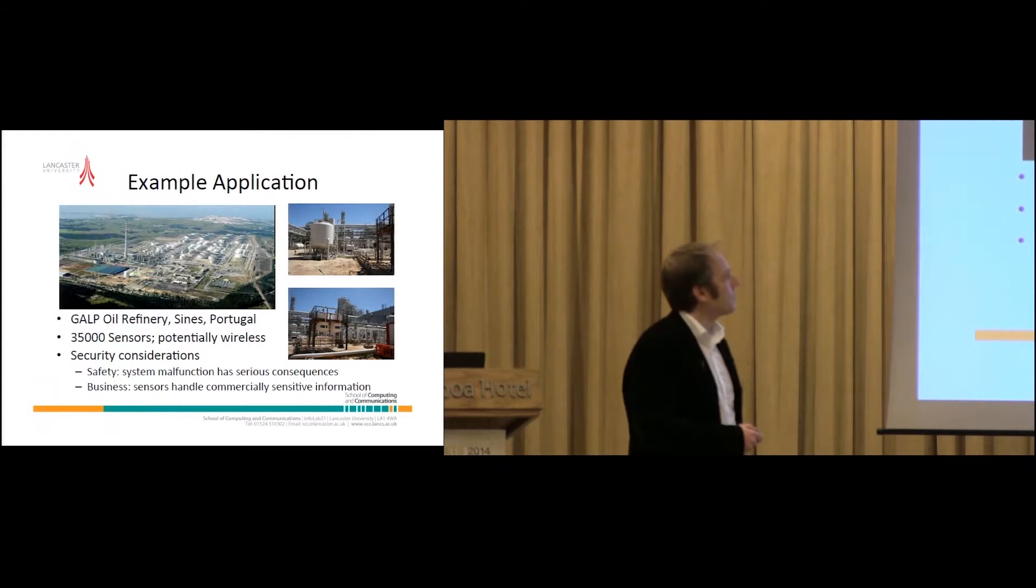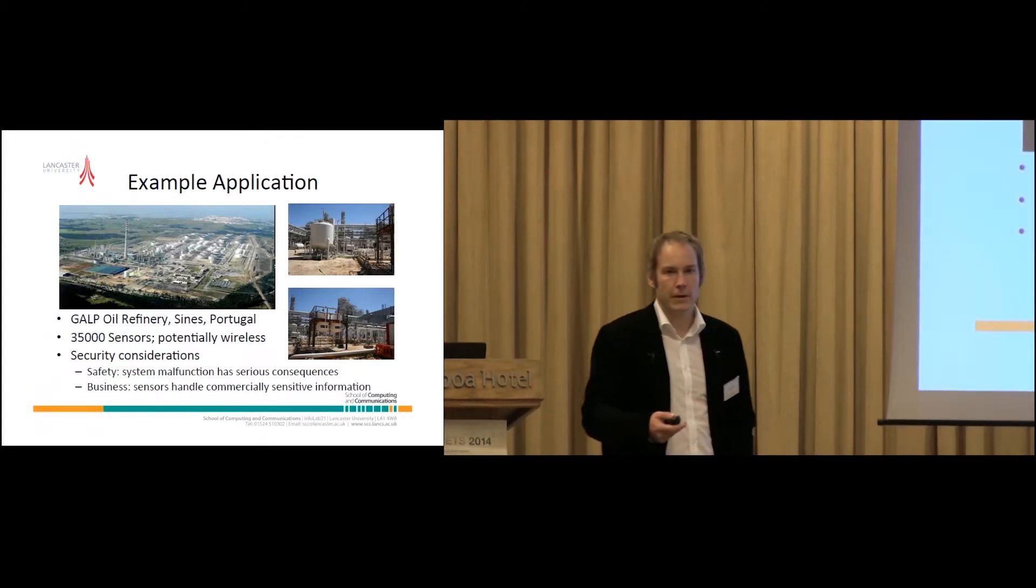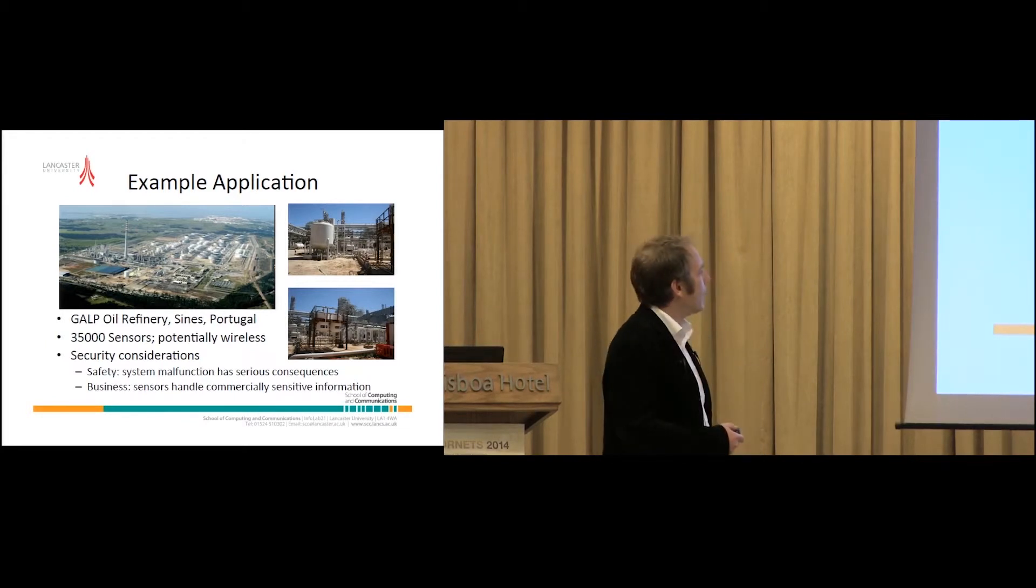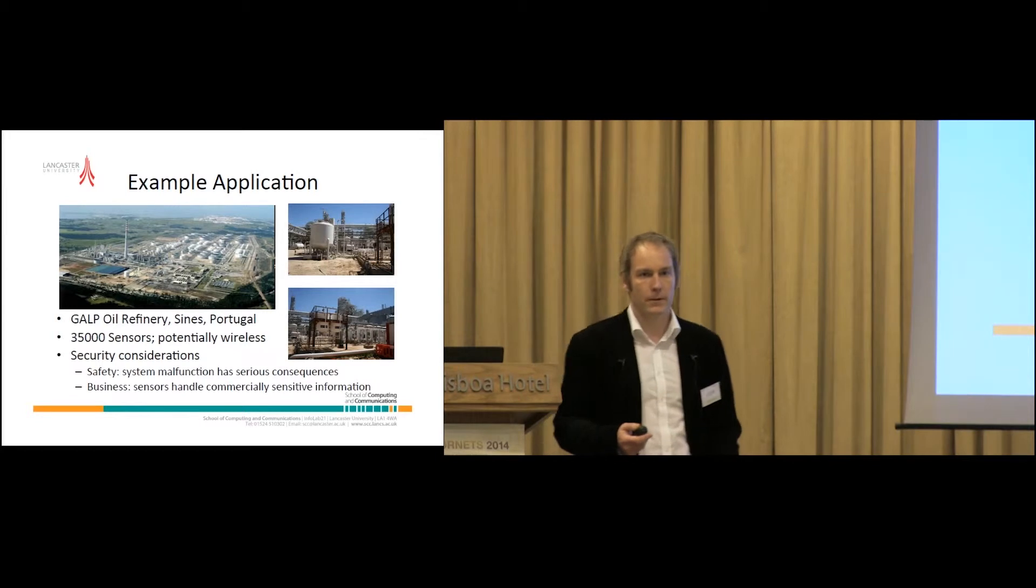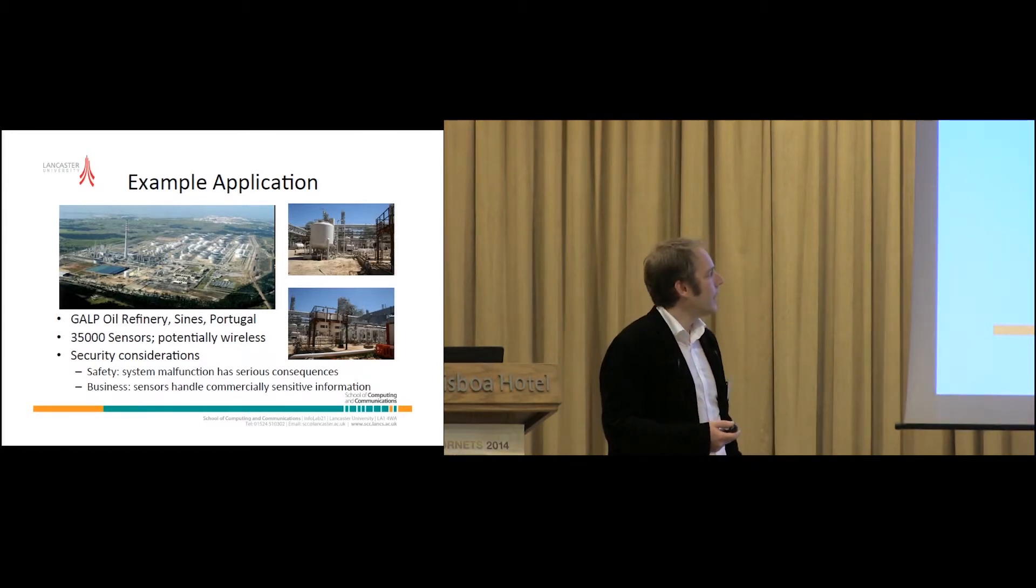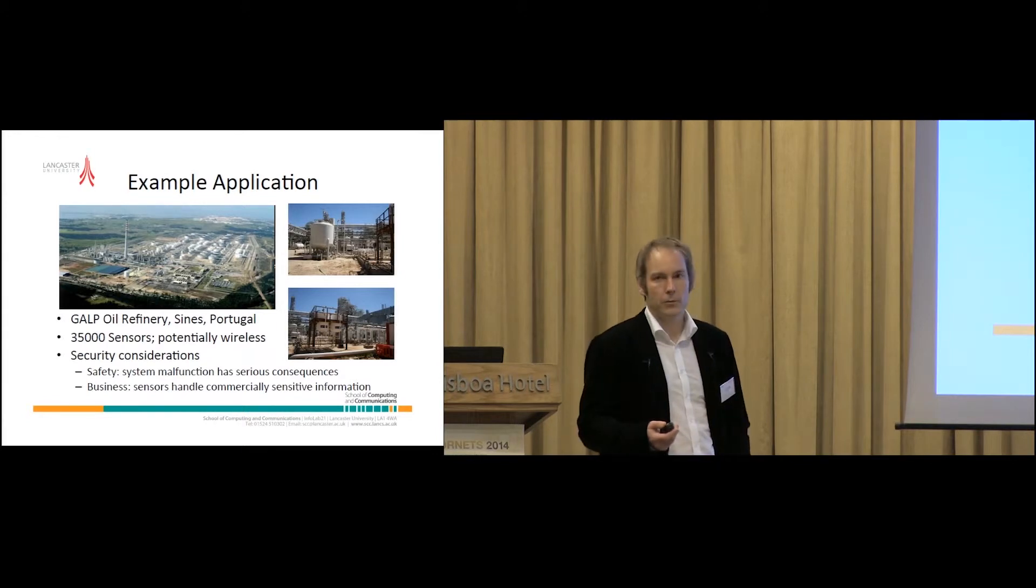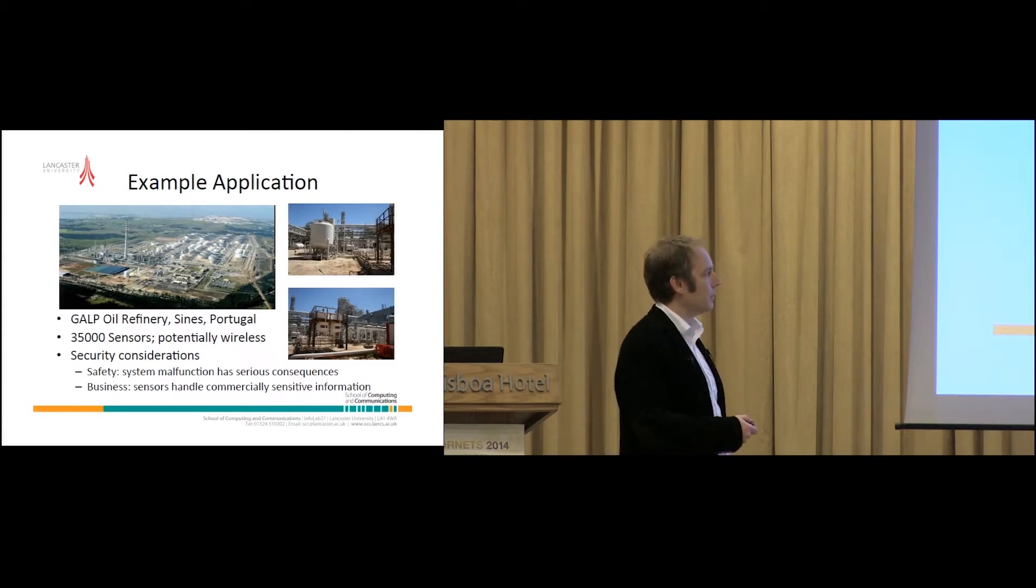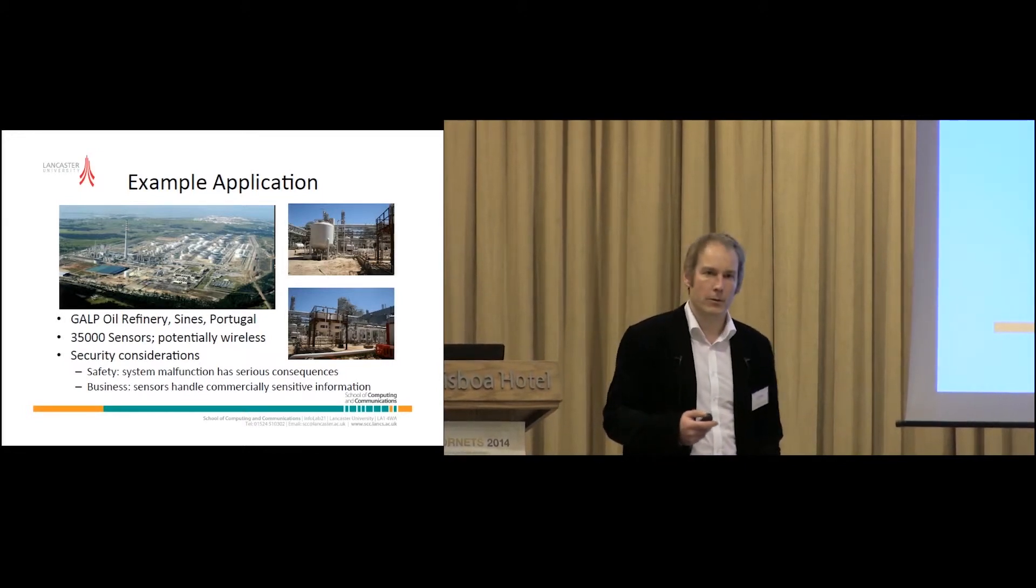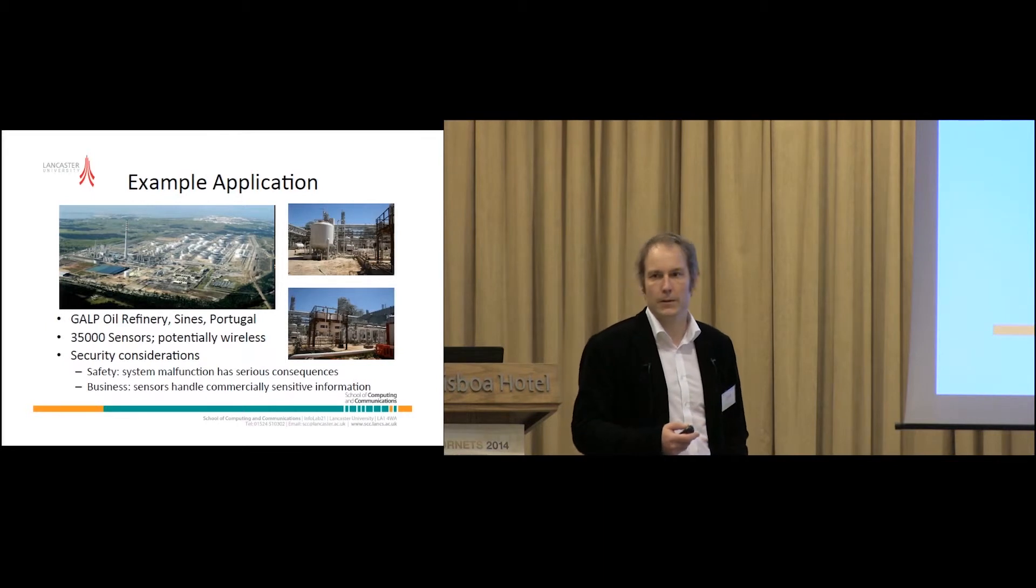In such a refinery, which are quite large - it's the dimension of a city, so you need to get buses to go around there - they have something about 35,000 sensors, quite a lot of sensing, a large sensor network. At the moment these are wired, but potentially in the future these will be wireless systems. When you think about such a scenario, you cannot neglect something like security anymore.